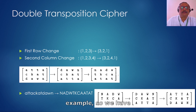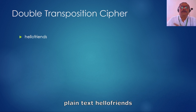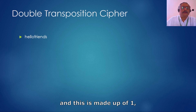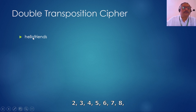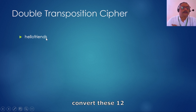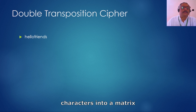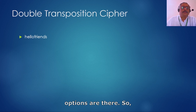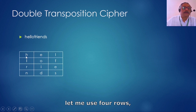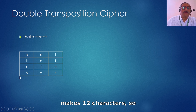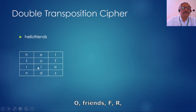Let's check with another example. The plain text 'hello friends' is made up of 12 characters. We can convert these 12 characters into a matrix — maybe 3×4, 4×3, 6×2, or 2×6. Let's use a 4 by 3 matrix. So 'h e l', 'l o h', 'e l l', 'o f r', 'i e n', 'd s' — that's how we write 'hello friends' row by row into the 4×3 matrix.